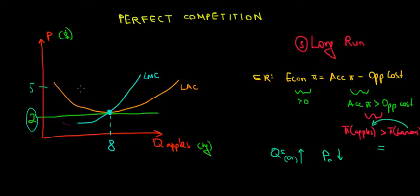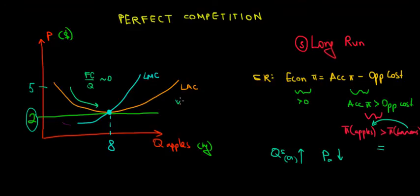Why does the long-run average cost fall and then rise? Initially it falls because the fixed costs are spread over the quantities we're selling. But after a certain point — after we spread it over a lot of quantities — the fixed cost per apple becomes very close to zero, so there's no more spread effect. All the additional costs are then coming from the variable cost per unit. Since we have positive variable costs of production, beyond a certain point that drags the long-run average cost back up again.